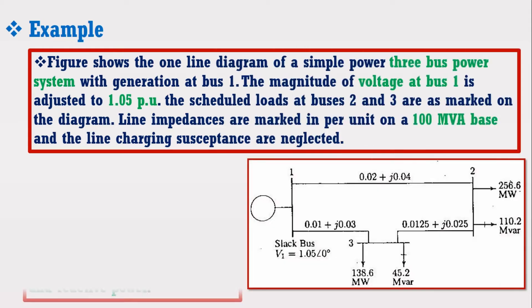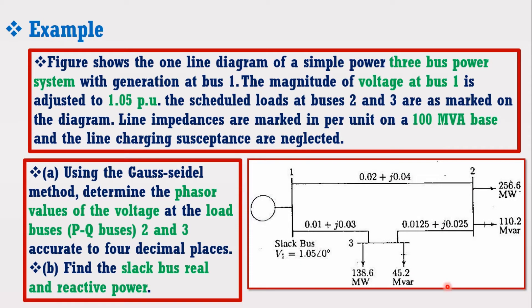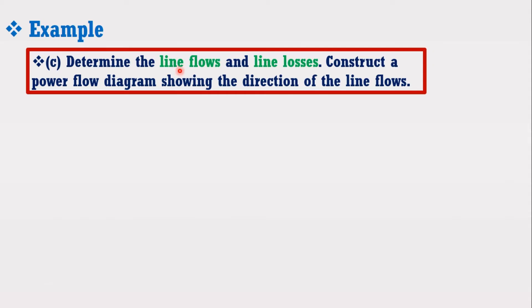Consider the figure of the example which consists of a generator at bus 1 and three transmission lines with their impedances given in per unit. Among three buses, bus 1 is operating as the slack bus, whereas bus 2 and 3 are operating as PQ buses consisting of loads. We have to determine the phasor values of the voltage at the load buses 2 and 3, as well as the slack bus real and reactive power, and also find the power flows and line losses of the system.